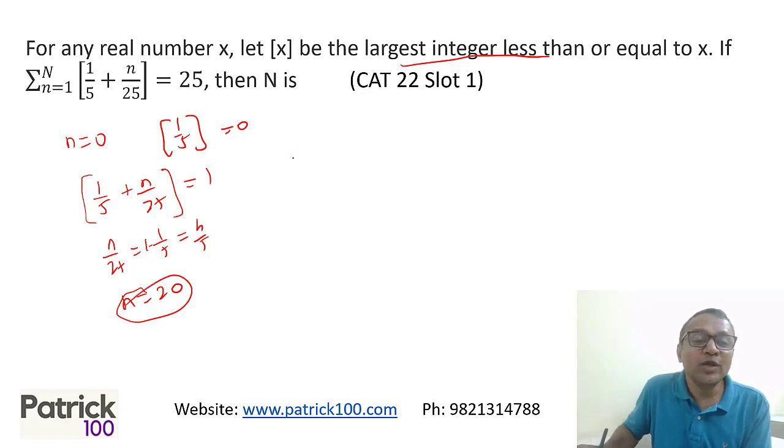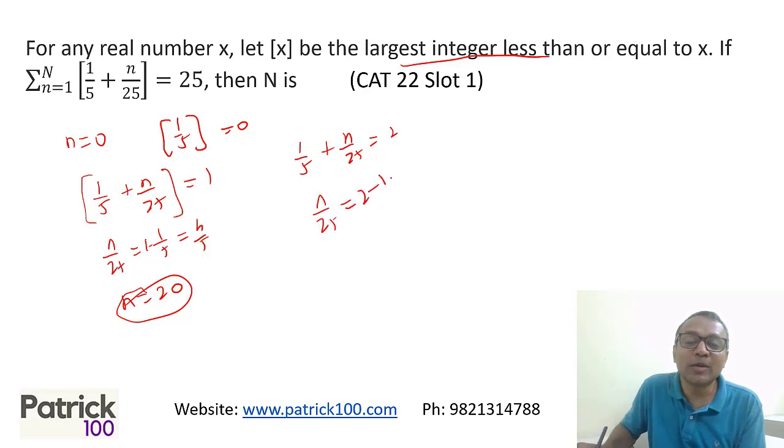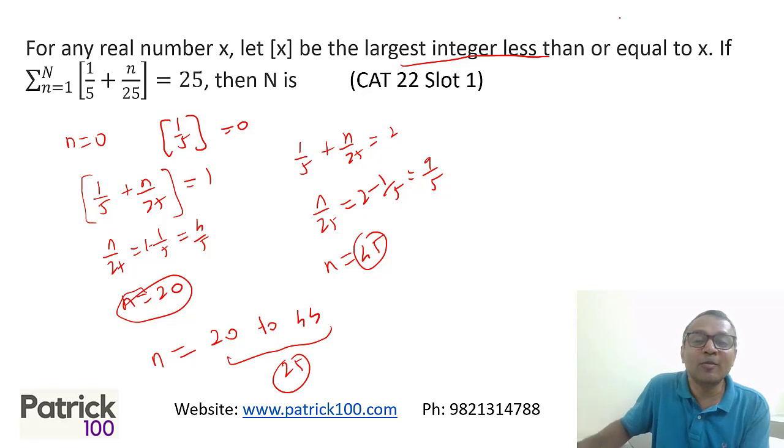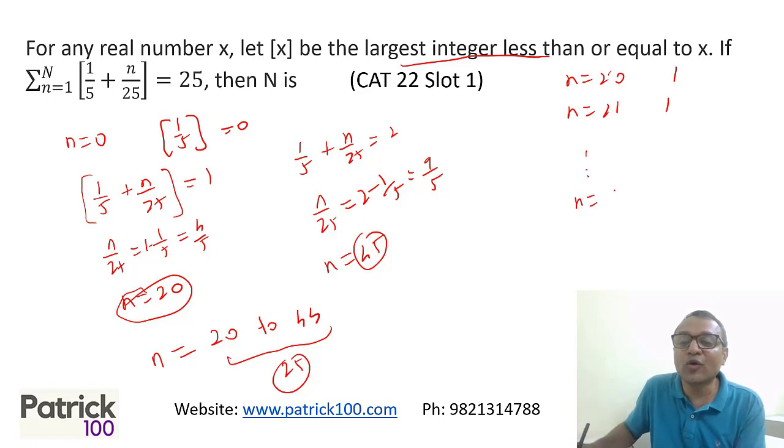Now see, when will we get 2? We get 2 when 1 upon 5 plus n upon 25 is equal to 2. We will get n 2. So what will be the value of n at that point of time? Which is n upon 25 is 2 minus 1 upon 5, right? Which is 9 upon 5. So n will be equal to 45. So at 45, it will be 2. That means from 20 to 44, when n equal to 24, this value will be 1. And if you look at 25 such values, in that case, the sum will be 25. From n equal to 20, the value is 1. n equal to 21, the value is 1. Now, till n equal to 44, the value is 1. 25 values and the summation, this is called summation is 25, satisfies.